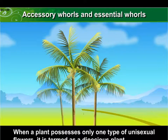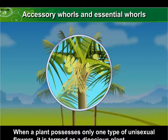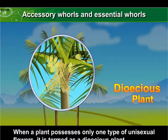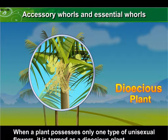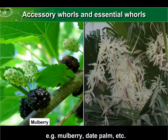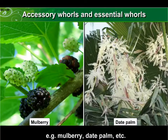When a plant possesses only one type of unisexual flower, it is termed a dioecious plant. Examples: mulberry, date palm, etc.